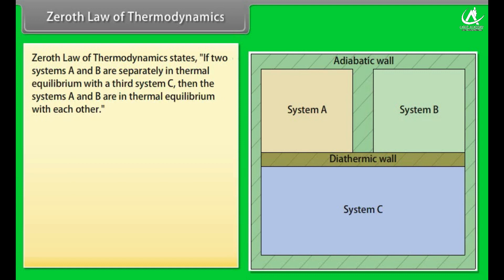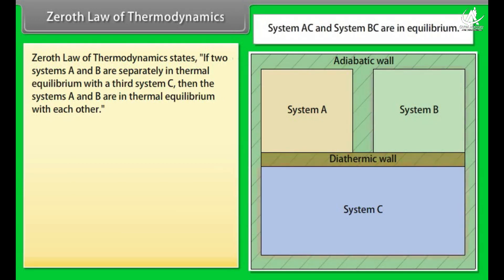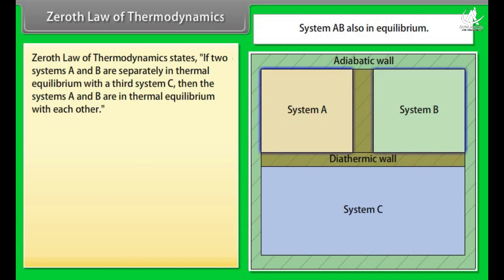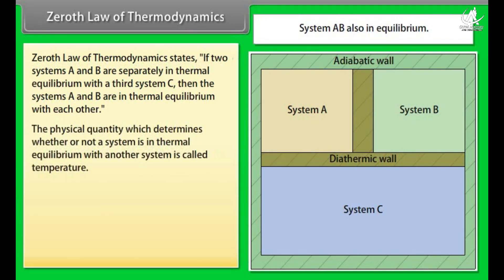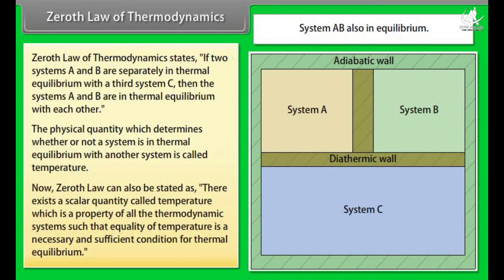Zeroth Law of Thermodynamics states: if two systems A and B are separately in thermal equilibrium with a third system C, then systems A and B are in thermal equilibrium with each other. The physical quantity that determines whether a system is in thermal equilibrium with another is called temperature. Equivalently, there exists a scalar quantity called temperature, and equality of temperature is a necessary and sufficient condition for thermal equilibrium.